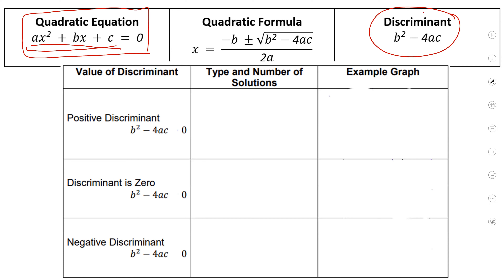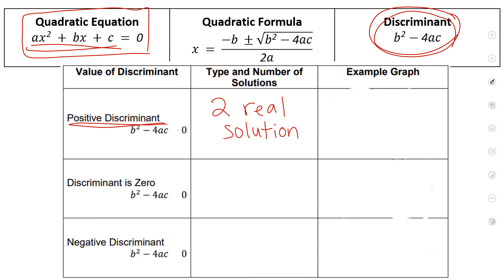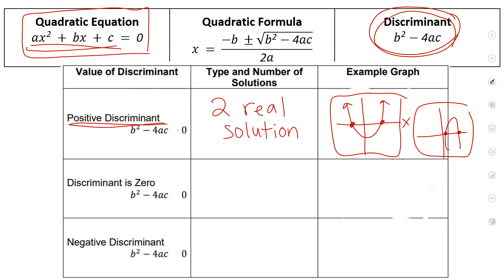Once you plug in numbers into this formula, if you get a positive answer, your discriminant is positive — that means you're going to have two real solutions. Do you guys remember another word for solution? X-intercepts, yeah. So an example would be something that has two x-intercepts, like a graph that crosses the x-axis two times. If your graph crosses the x-axis twice, that means your discriminant was positive.